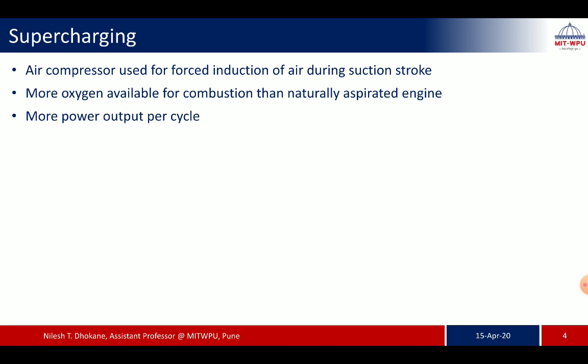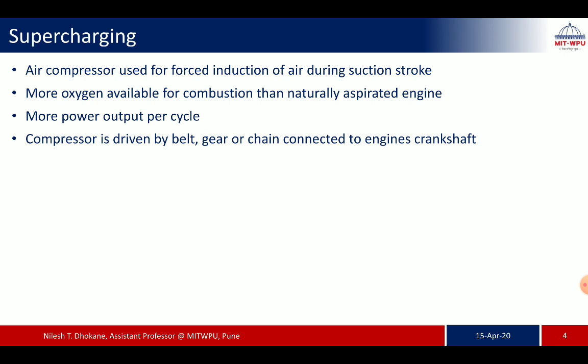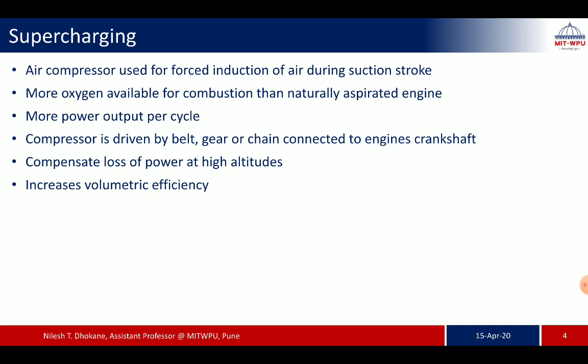This compressor is driven by a belt, gear, or chain connected to the crankshaft, as shown in the previous diagram. The use of supercharging compensates for the loss of power at high altitudes. At high altitudes, the density of air decreases and comparatively less mass of air is taken inside the combustion chamber. Due to the presence of the supercharger, the air gets compressed and this power loss at high altitudes is compensated.